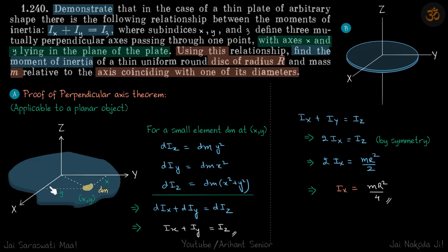About the y-axis, the moment of inertia will be dm times x squared. And about the z-axis, this is the distance, so the moment of inertia will be dm times (x squared plus y squared).